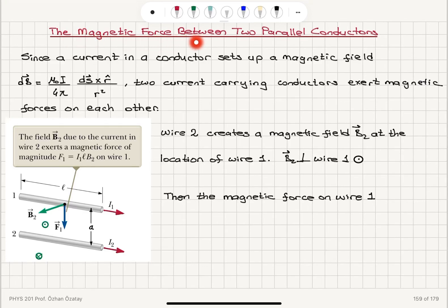The magnetic force between two parallel conductors. Since a current in a conductor sets up a magnetic field — mu0 i over 4pi, ds cross r-hat over r-squared — this is our Biot-Savart law. Two current-carrying conductors will exert magnetic forces on each other.